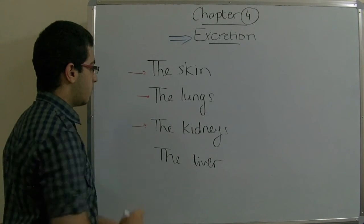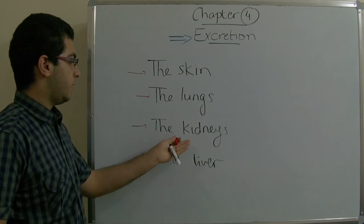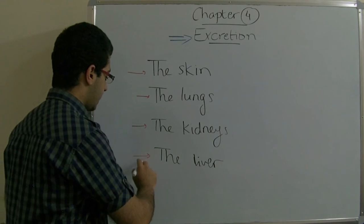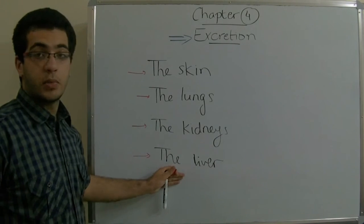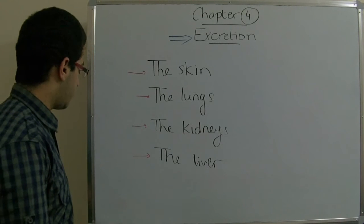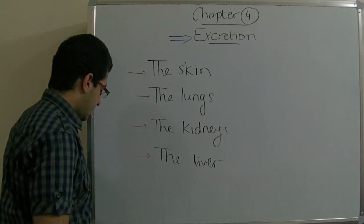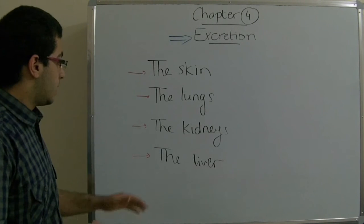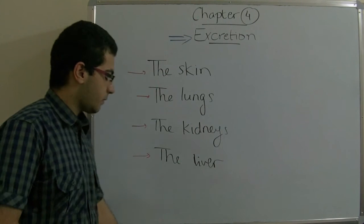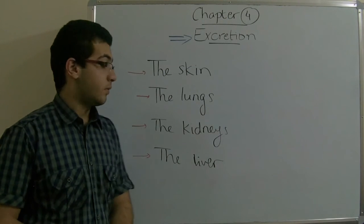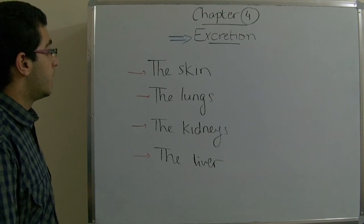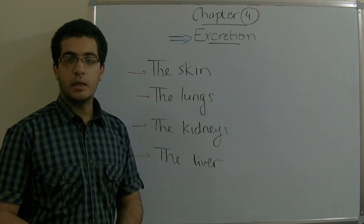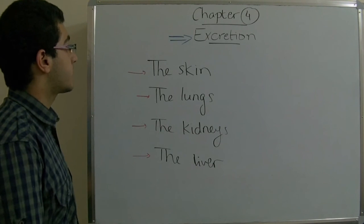Through the kidneys, water is excreted in the form of urine along with the nitrogenous waste products. The liver breaks down the nitrogenous and poisonous substances inside the body in order to transform them into uric acid, which is then expelled through the urinary bladder outside the body.